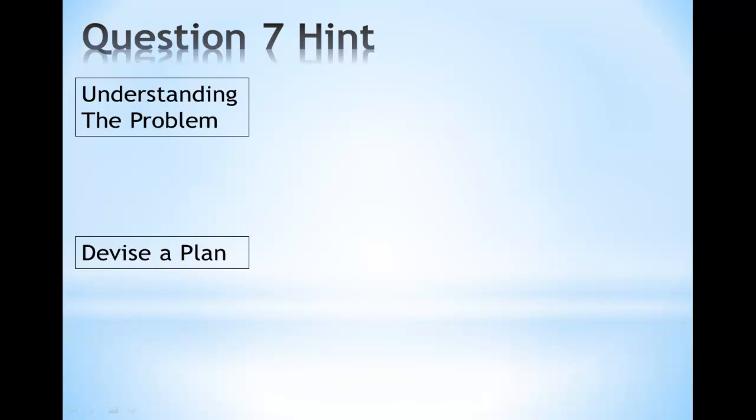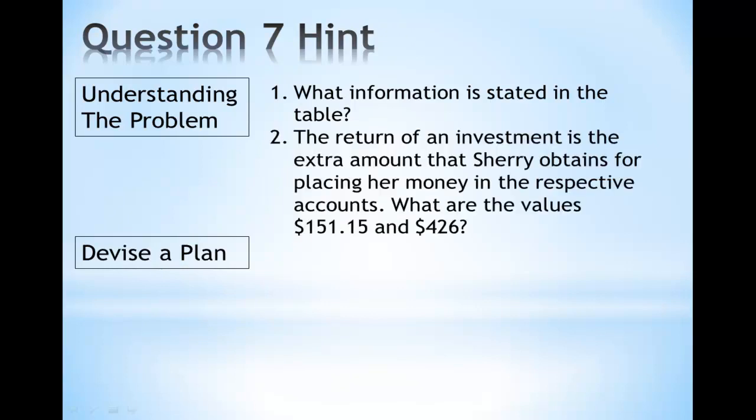The first step is to understand the problem. What information is stated in the table? The return of an investment is the extra amount that Sherry obtains for placing her money in the respective accounts. What do the values $151.15 and $426 represent?